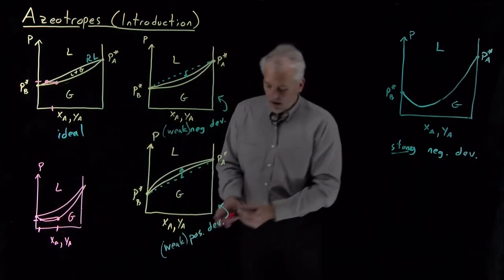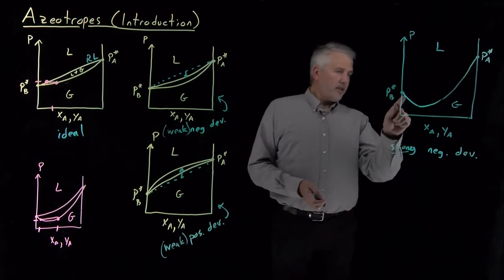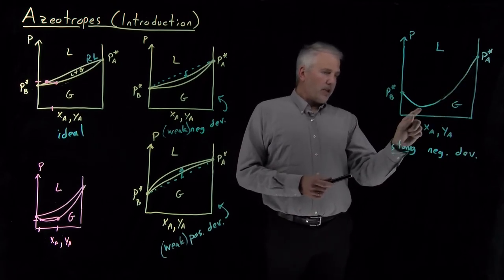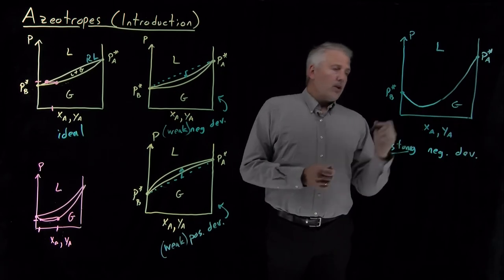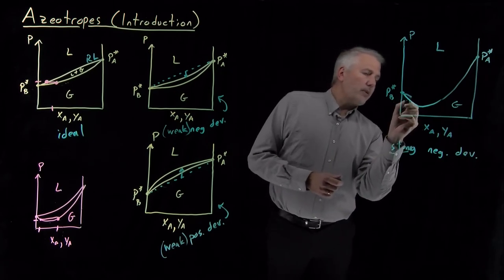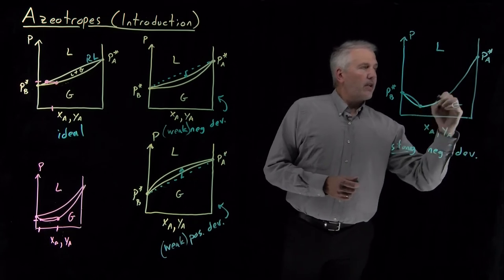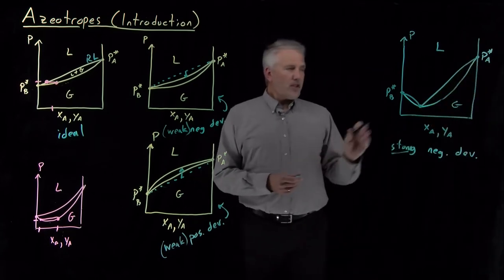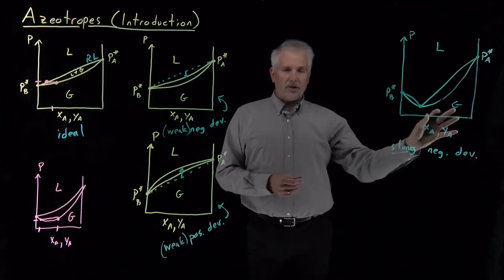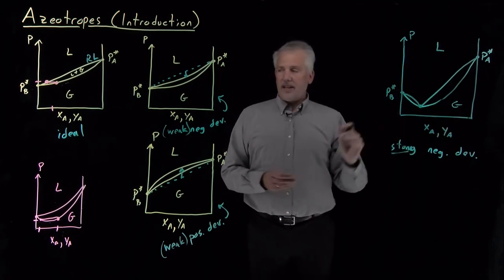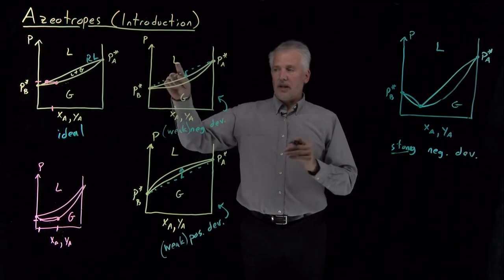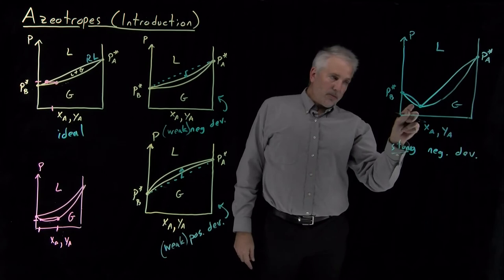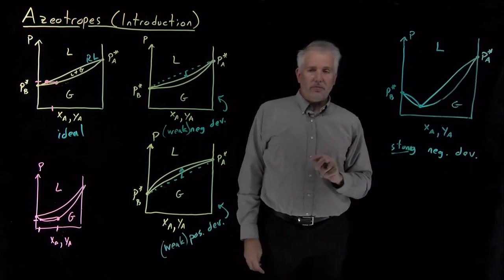It undergoes a minimum on this curve. Whenever, in this case, the dew point curve on this pressure composition diagram goes through a minimum, what necessarily must happen is that the bubble point curve connects to that minimum. So we do still have liquids at high pressure, gases at low pressure. We can still have deviations from Raoult's law that bend the curve downward, not just a little bit, but quite a lot. So the pressure drops much below what Raoult's law would have predicted.